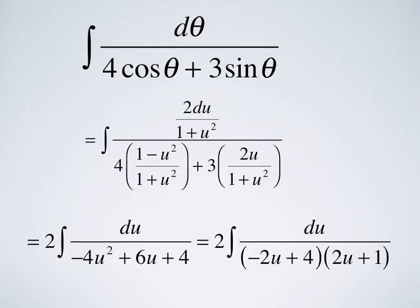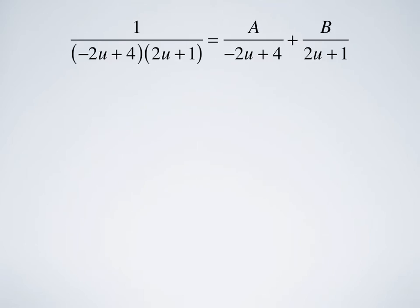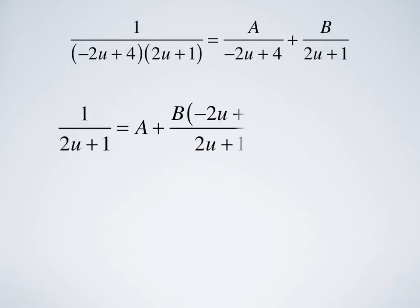The denominator decomposes — we can factor it. So we have 2 times the integral of du over (-2u+4)(2u+1). We're going to have to do partial fractions here. We set up 1/[(-2u+4)(2u+1)] = A/(-2u+4) + B/(2u+1), and we need to find the constants A and B.